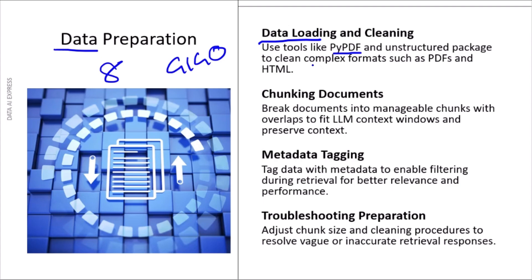This leads to the most critical topic in Data Preparation: chunking. What is your LLM context window size? What chunking strategy are you using? I guarantee you will get questions about setting overlapping chunks to preserve context. After chunking your documents, how do you apply metadata tagging? Troubleshooting is key here — you will get a scenario question that says your RAG application is giving vague results, the model can't understand the context. What's the first thing you check? The answer is always your chunking strategy and data preparation.